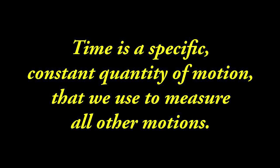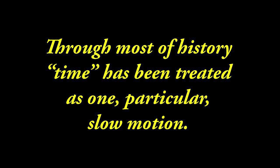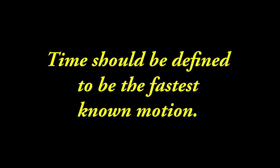There have been five main historical definitions for time — you already know these five definitions. To recap: time is a specific constant quantity of motion that we use to measure all other motions. Through most of history, people have treated time as one particular slow motion. Time should be defined to be the fastest known motion. Physicists can create different types of physics using different beginning definitions for time.